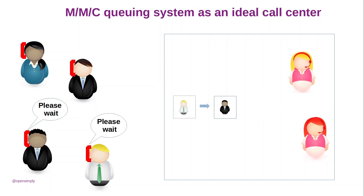Now any other calling client will be put on hold. If some agent becomes idle, the first client in the waiting line is retrieved and connected to that agent.